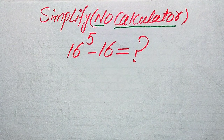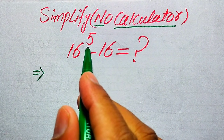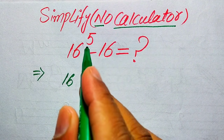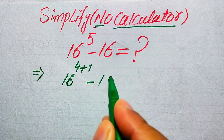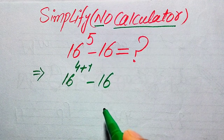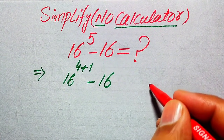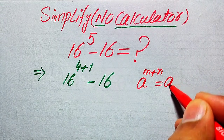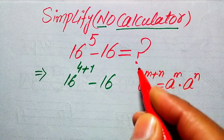Now we move toward the solution. First we need to focus on the exponent of this term, which is 5. We write it as 4 plus 1 minus 16. We use the exponential law: if we have a to the power of m plus n, it equals a to the power of m multiplied by a to the power of n.